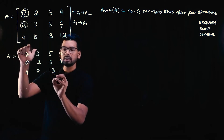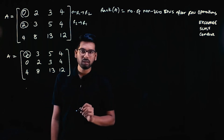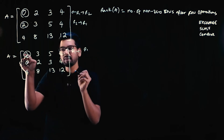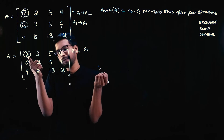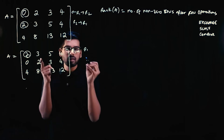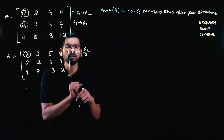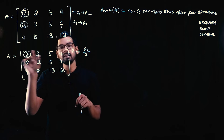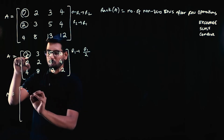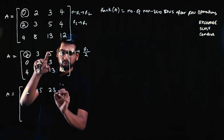We still don't have the first element of the first row as one. So we divide the first row by whatever number is there — since 2 divided by 2 is 1. We divide the entire first row by 2: R1 becomes R1/2, giving us 1, 1.5, 2.5, 2. This is called scaling.